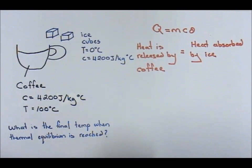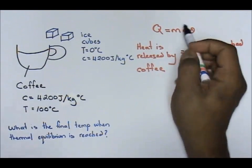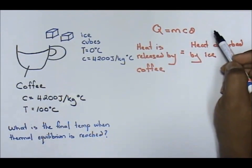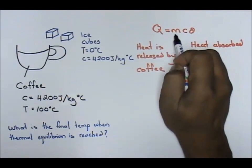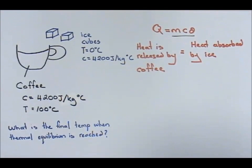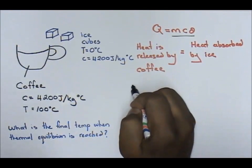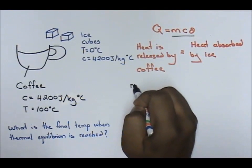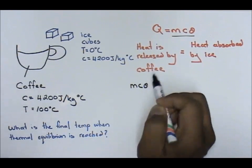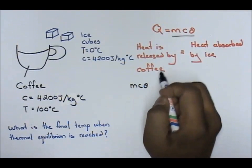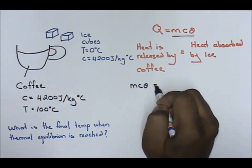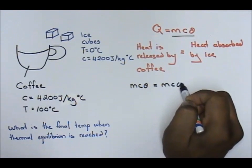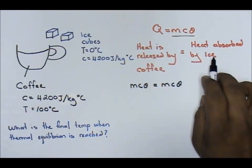Now watch this carefully. Heat released by coffee — Q is your heat released or heat absorbed — so I am going to use this formula: MC theta for coffee equals MC theta for ice.